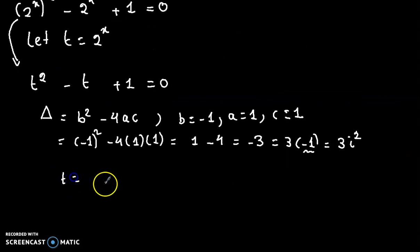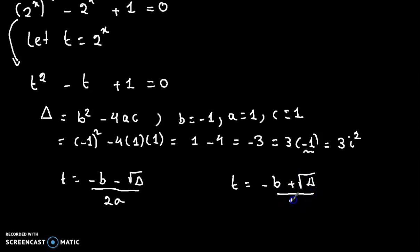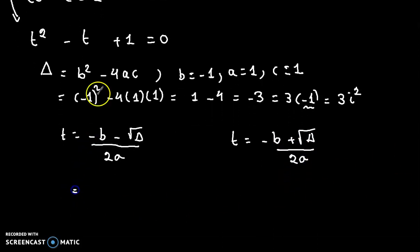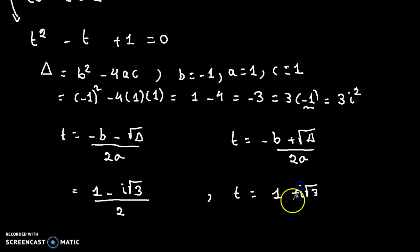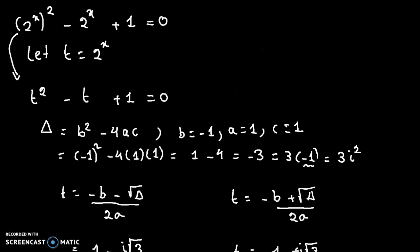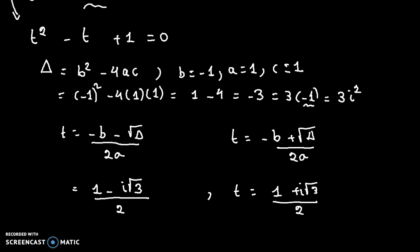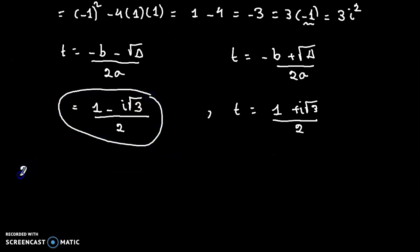Using the quadratic formula: t equals minus b minus radical delta over 2a, or t equals minus b plus radical delta over 2a. So t equals 1 minus i radical 3, over 2, or t equals 1 plus i radical 3, over 2. Since t equals 2 to the power x, for the first solution we have 2 to the power x equals one-half minus i radical 3 over 2.